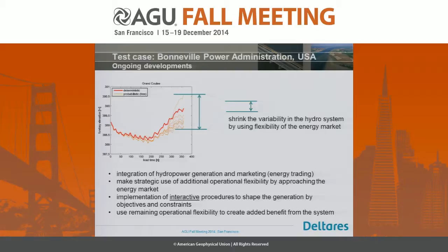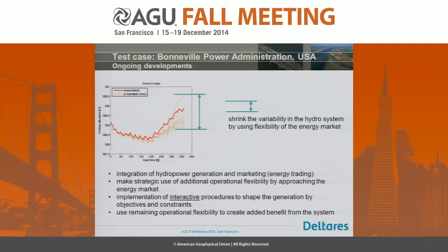We are integrating hydropower generation with energy market trading — coupling an energy trading optimization model to the hydropower generation model. An important aspect is interactivity: for BPA, it's not simply running an optimization and being done, but interacting with the optimization model to work toward a good solution. If operational flexibility remains, it can be used to create added benefit — extra revenues by buying and selling energy in the market.